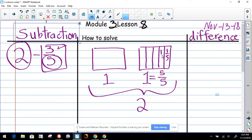So now we're gonna subtract 3/5. This is 1/5, this is 1/5, and this is 1/5. When you add them together, that's 3/5.